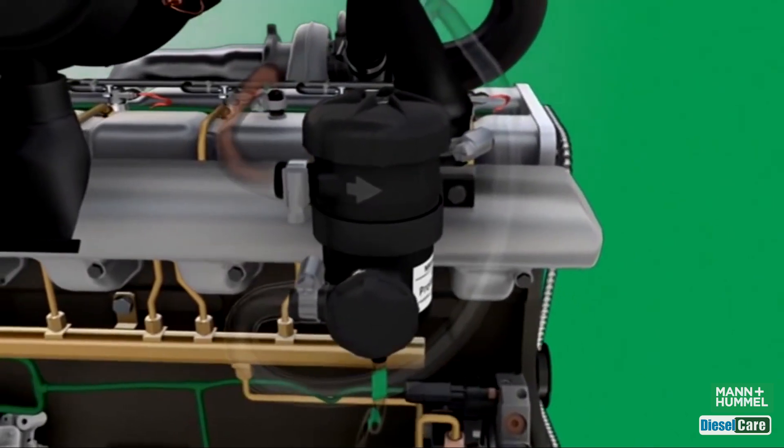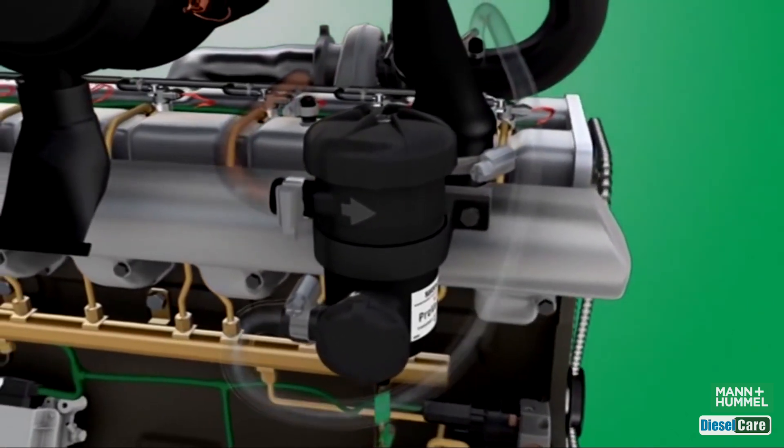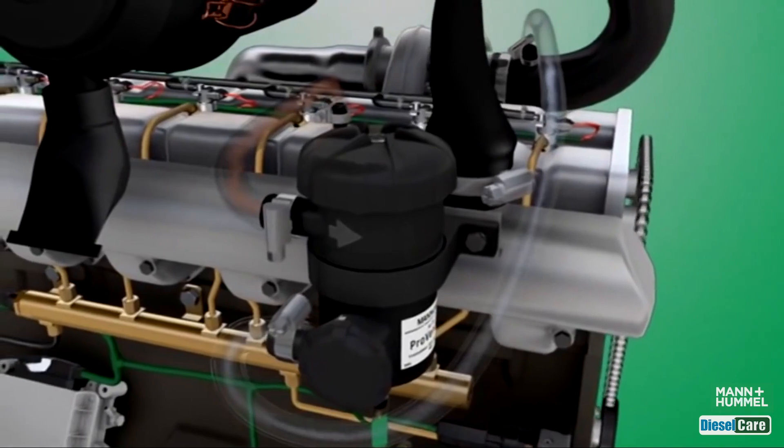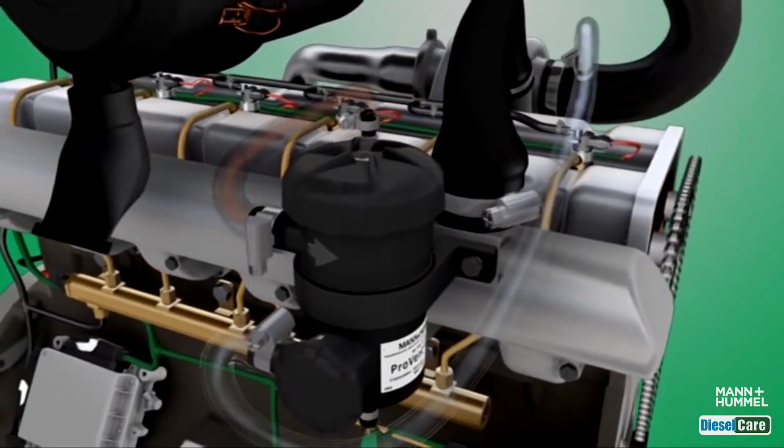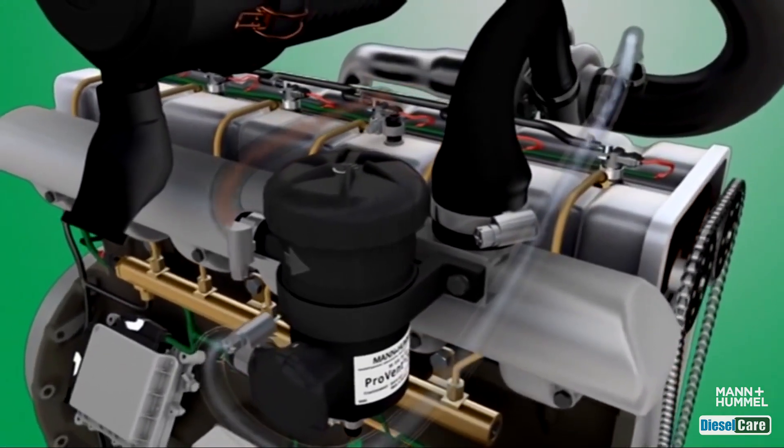The oil separator exploits the principle of coalescence to separate the oil. As blow-by gases pass through the medium, small oil droplets collect on the fibers of the separation medium and grow.